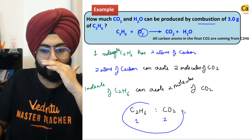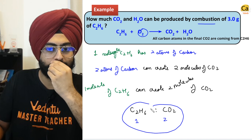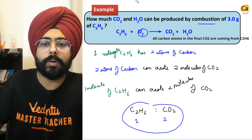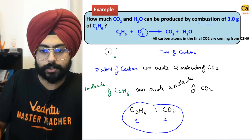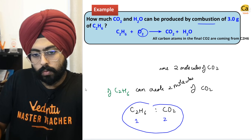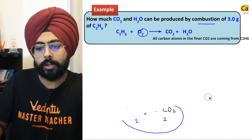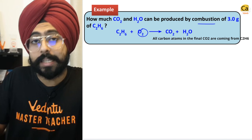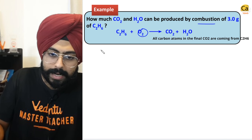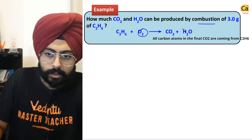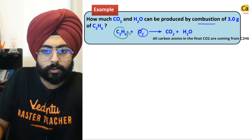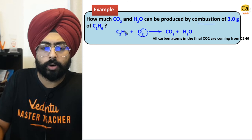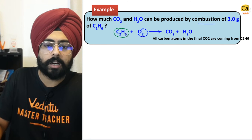Now I can also say that all the hydrogen atoms present in water are coming from C2H6. All the water molecules — the hydrogen atoms in them are coming from C2H6. So one molecule of C2H6 has six atoms of hydrogen.